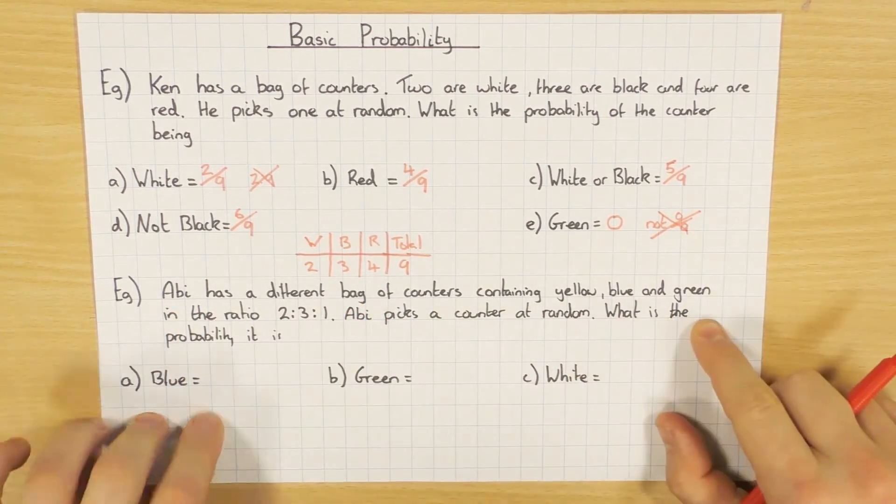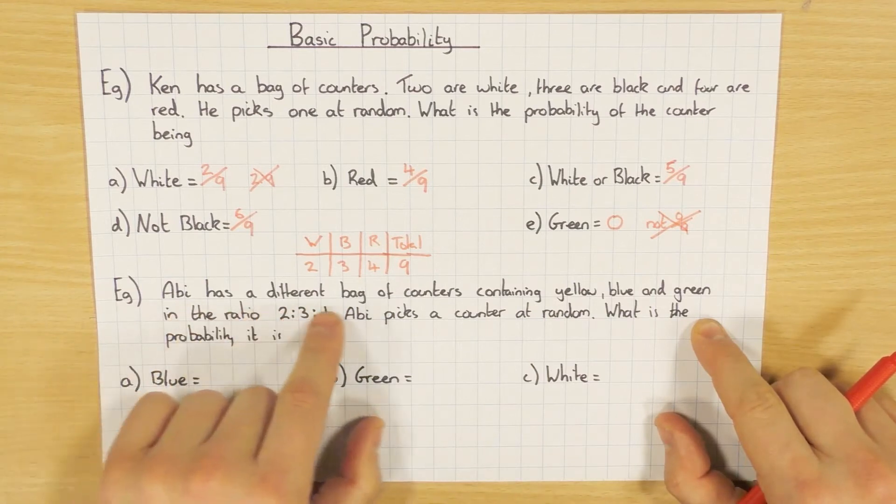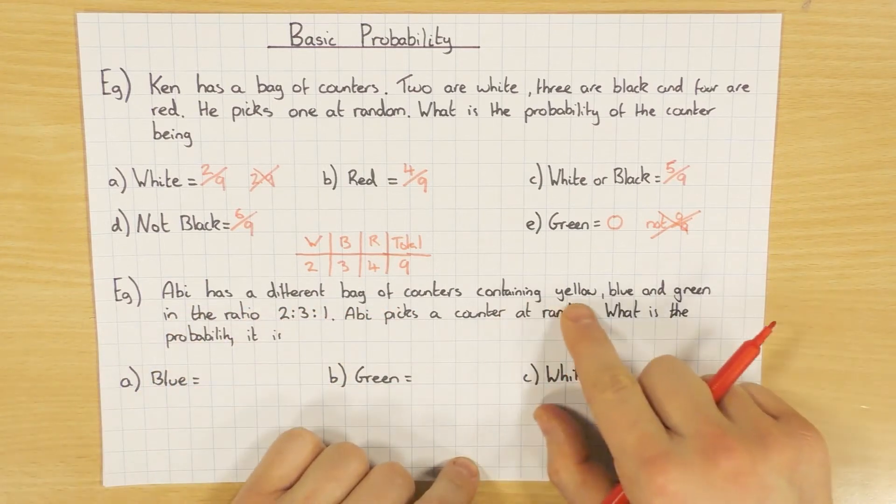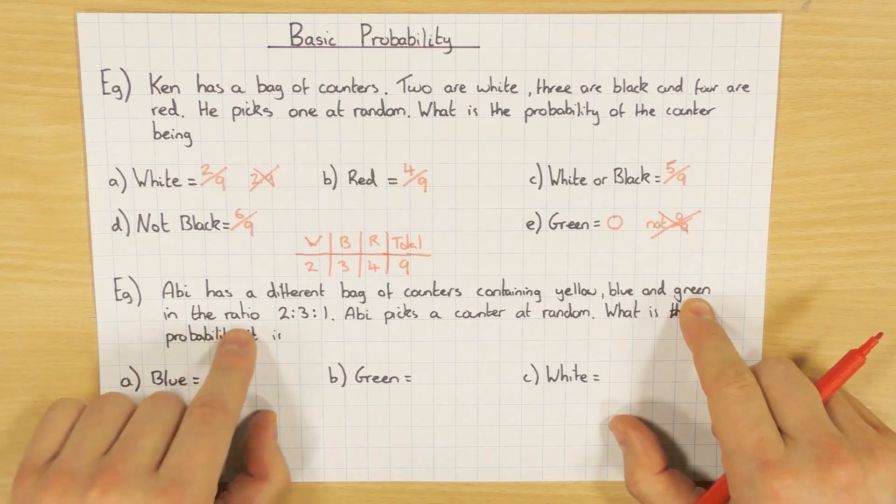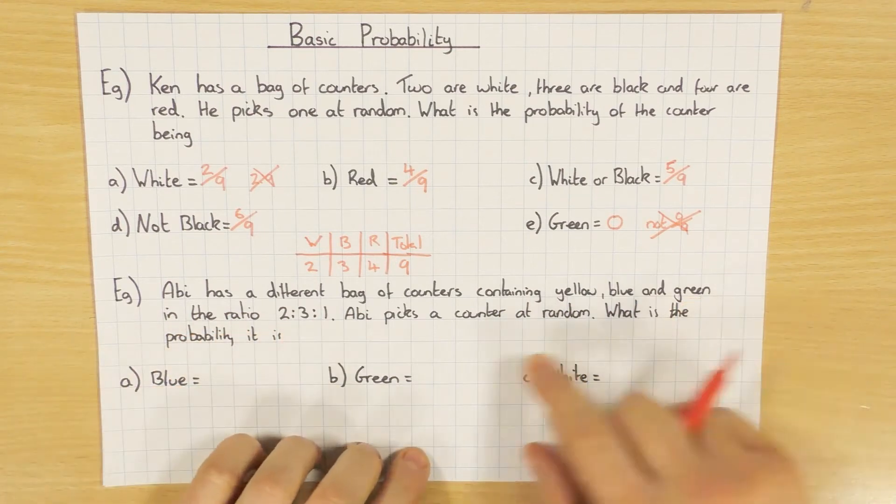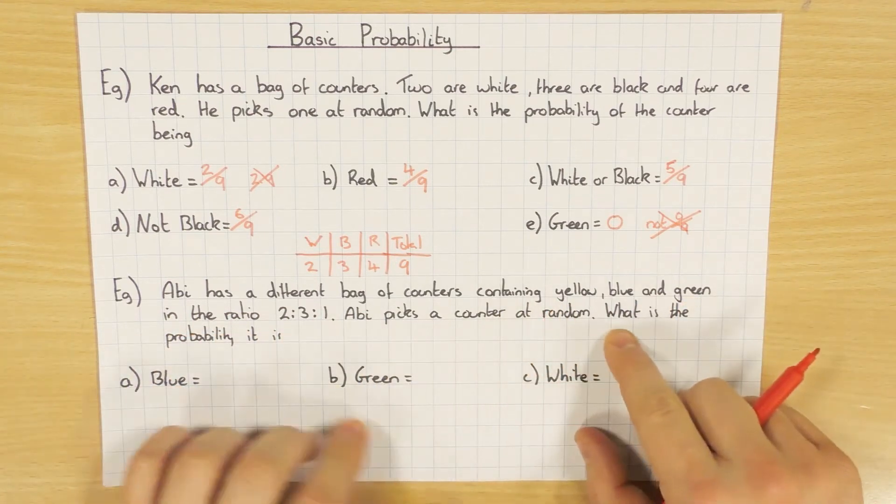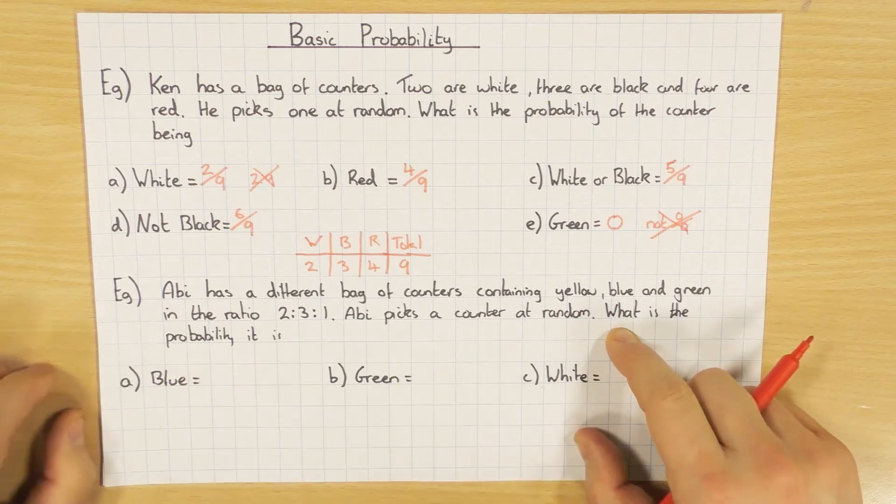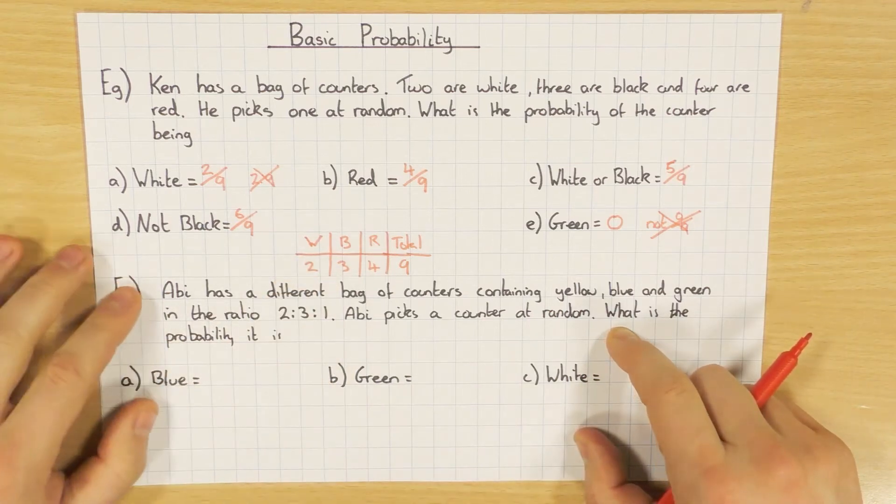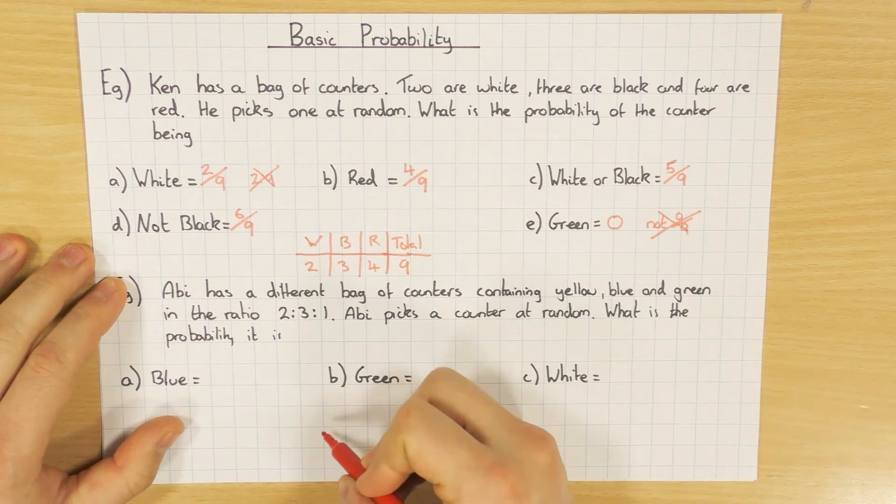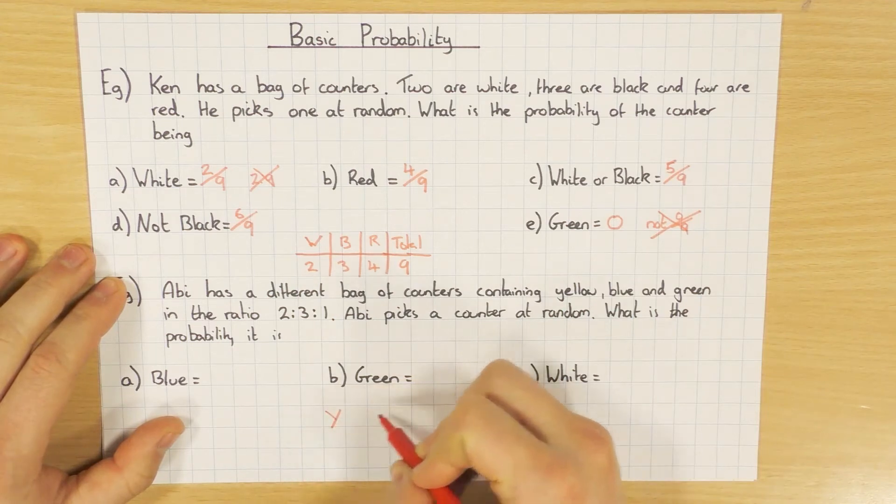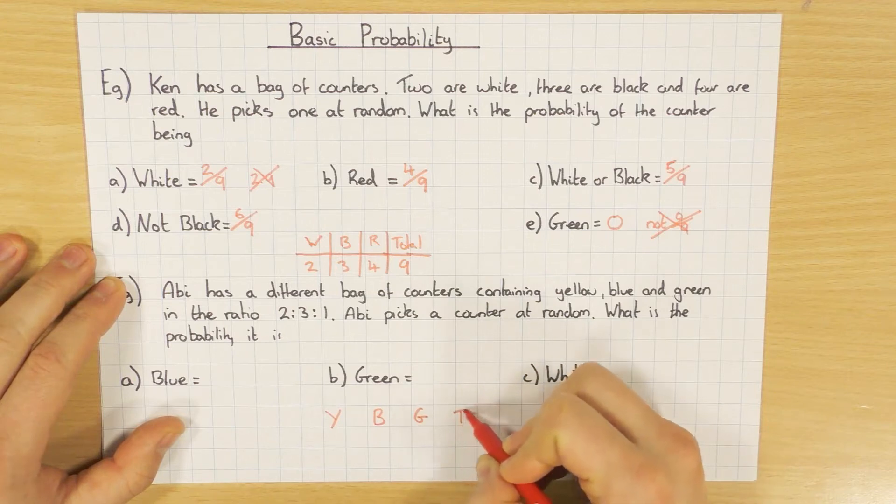Next one here then, guys. This time it's been given as a ratio. So Avi has a different bag of counters containing yellow, blue and green in the ratio of 2:3:1. Avi picks a counter at random. What's the probability it's blue, green or white? So exactly the same thing. I'll draw myself a little table. So I've got yellow, blue and green. And don't forget to add one on for the total because it's going to help us.